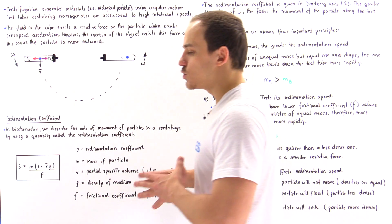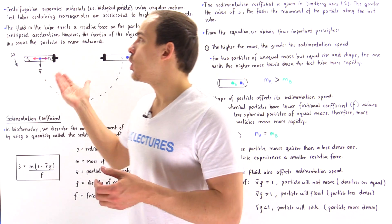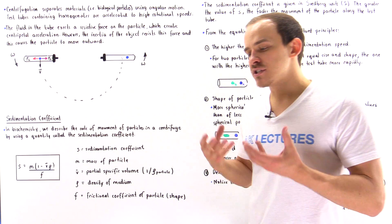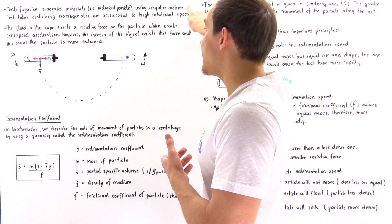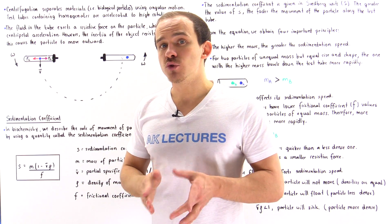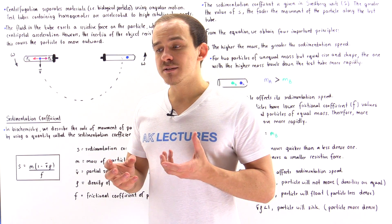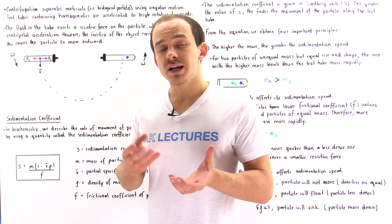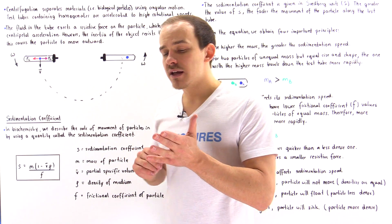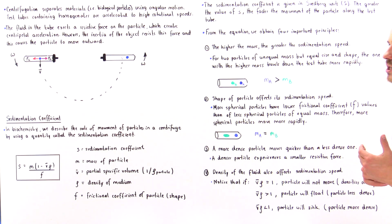If we take the test tube and place it inside a centrifuge, a process known as centrifugation takes place. Centrifugation is a process by which we use angular motion — we accelerate our test tube to very high rotational speeds — and this allows us to separate the different components inside our homogeneous mixture based on things like mass, density, size, and shape.